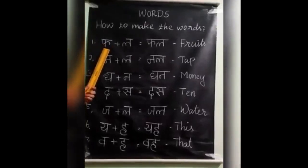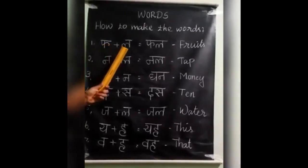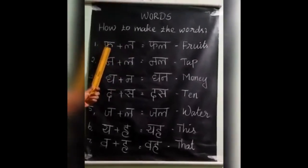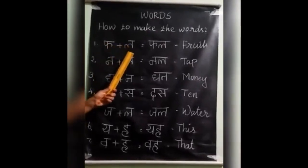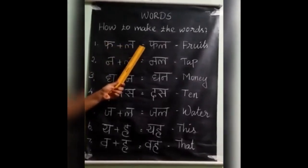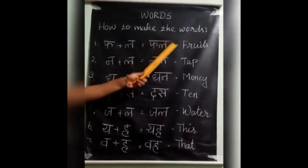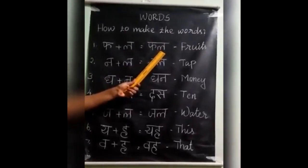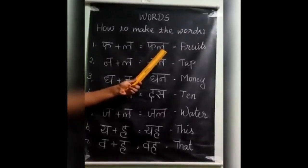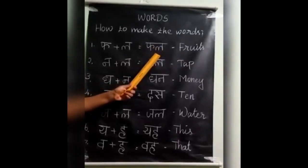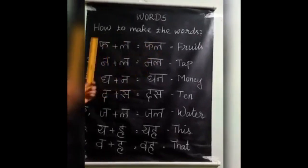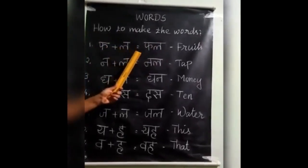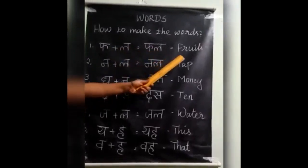What is this letter? Fa plus la. First step, two letter words. You want to see only two letter words today. Fa plus la equal to fal. How to pronounce this letter? When there is no long sound at the end of the word, the last sound 'a' is not pronounced. So it is pronounced as 'fal'. Fal means fruits.